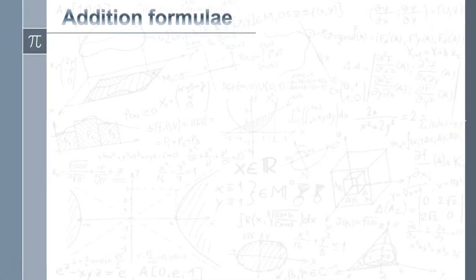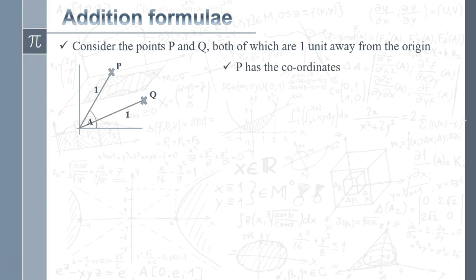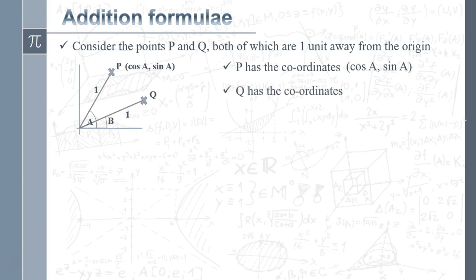You're not going to be asked to reproduce this, but it's always a good idea to know there's a sound mathematical reason for why these equations and links between all the trig formulae work. I'm going to start with two points P and Q, both a distance of one unit away from the origin. The angle between the line to P and the x-axis is A, so P has coordinates (cos A, sin A).